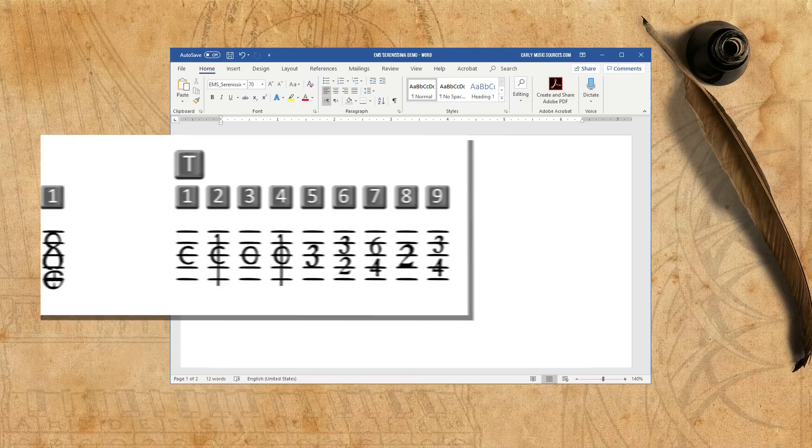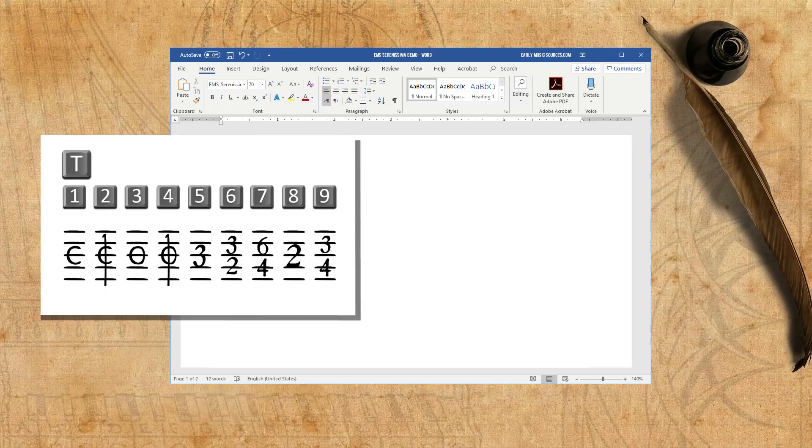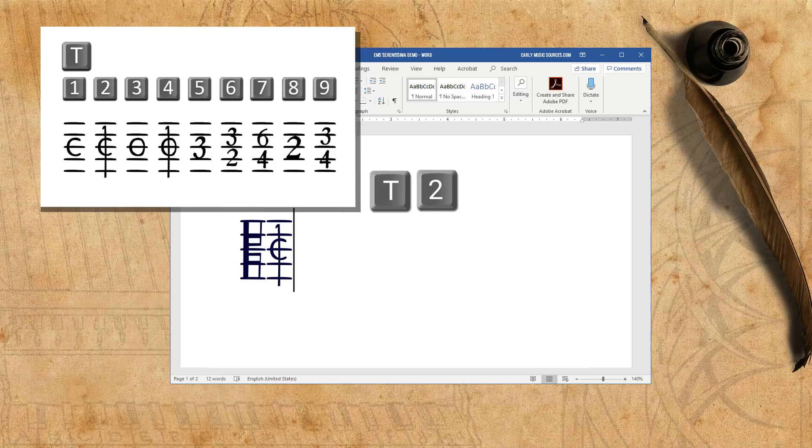Time signatures are all made by typing capital T, followed by a number between 1 and 9. Alla breve, for example, is capital T followed by 2. Check the map for the other time signatures.